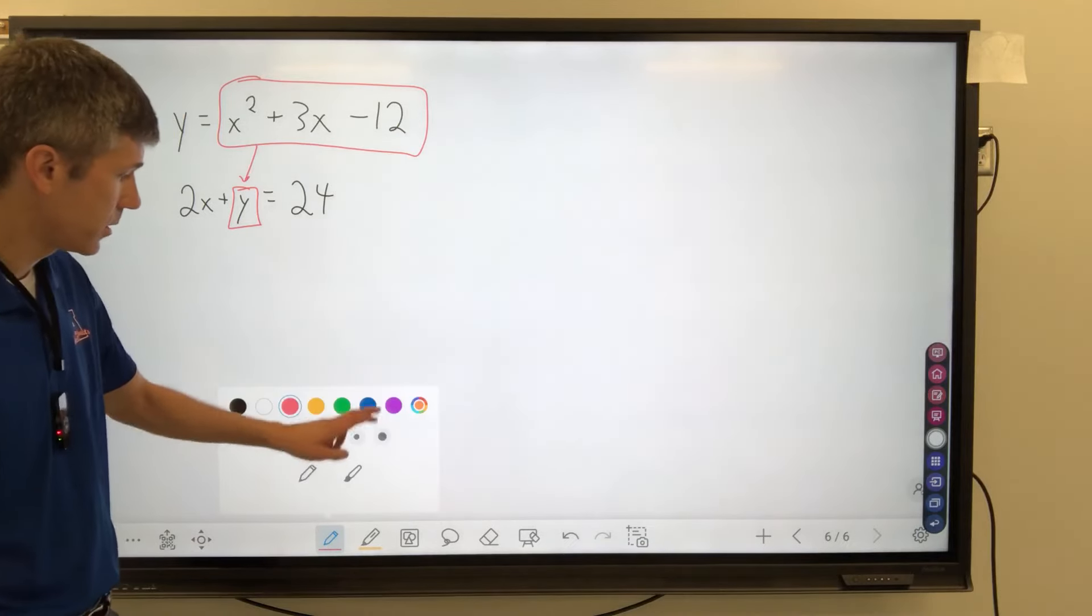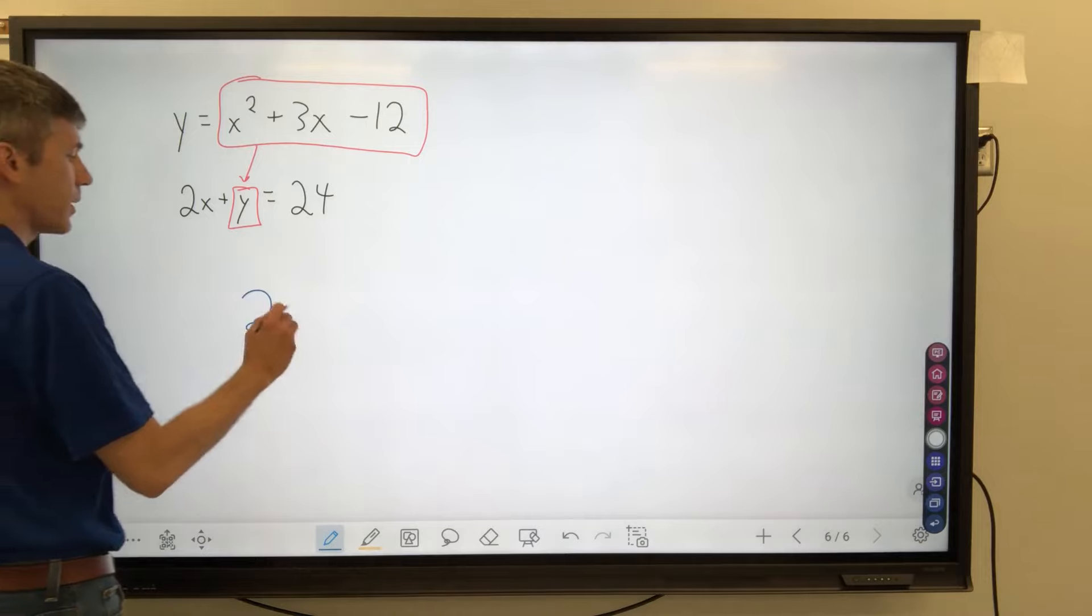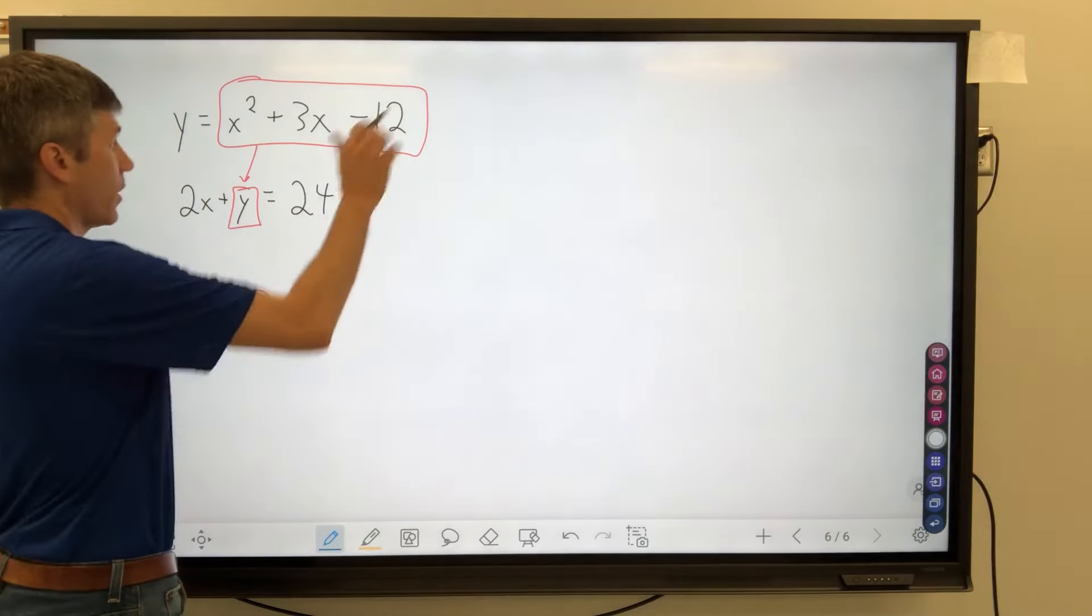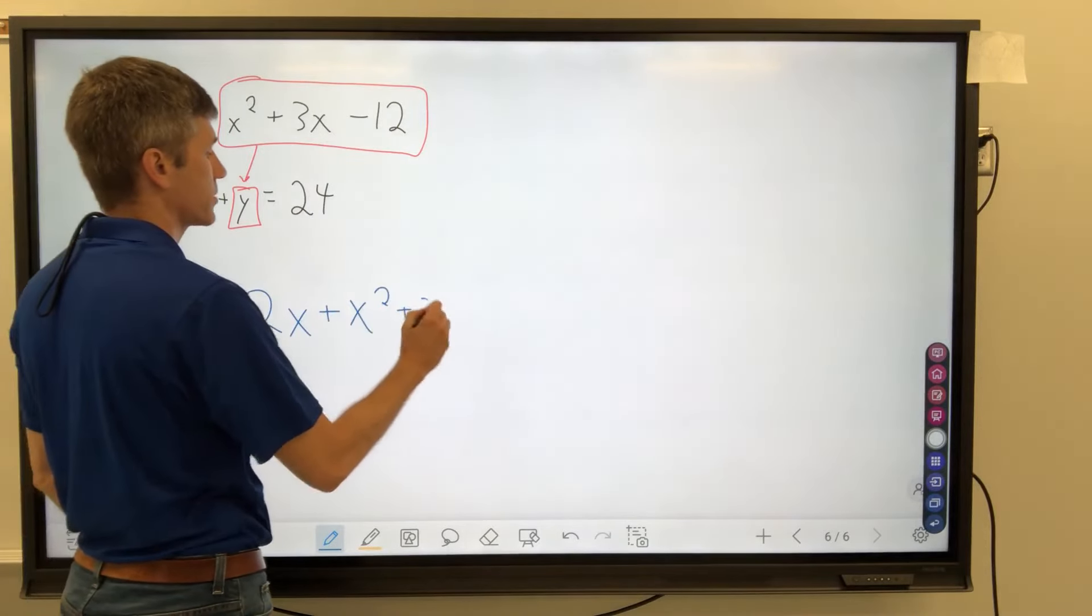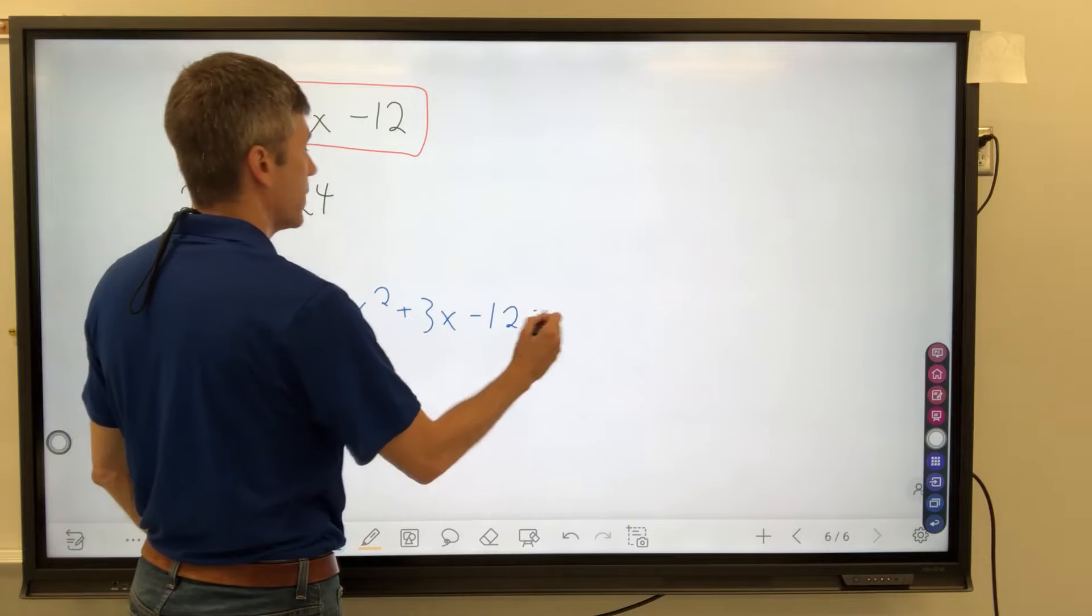Let's switch colors. We'll have 2x plus all that stuff, x squared plus 3x minus 12, and that's equal to 24.